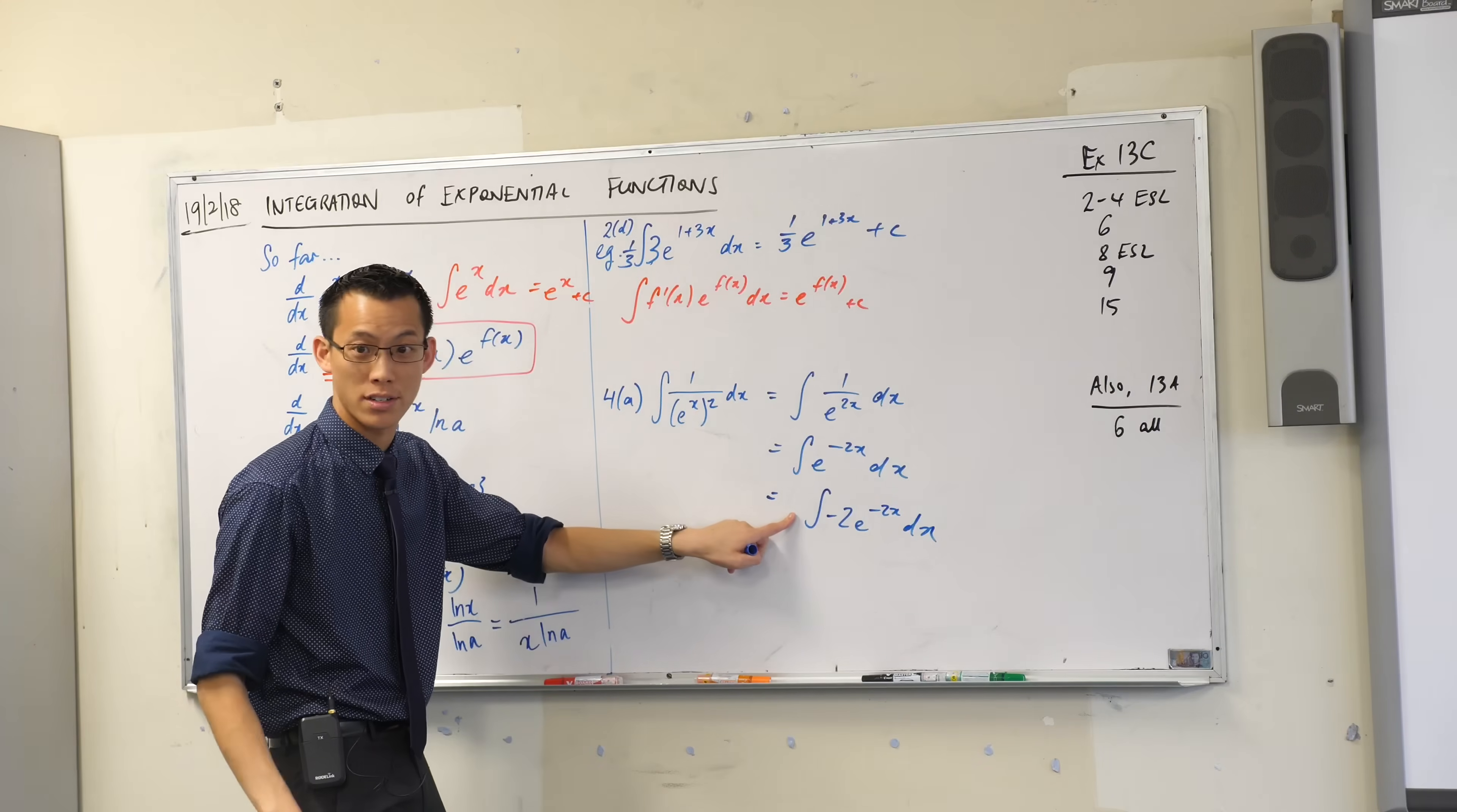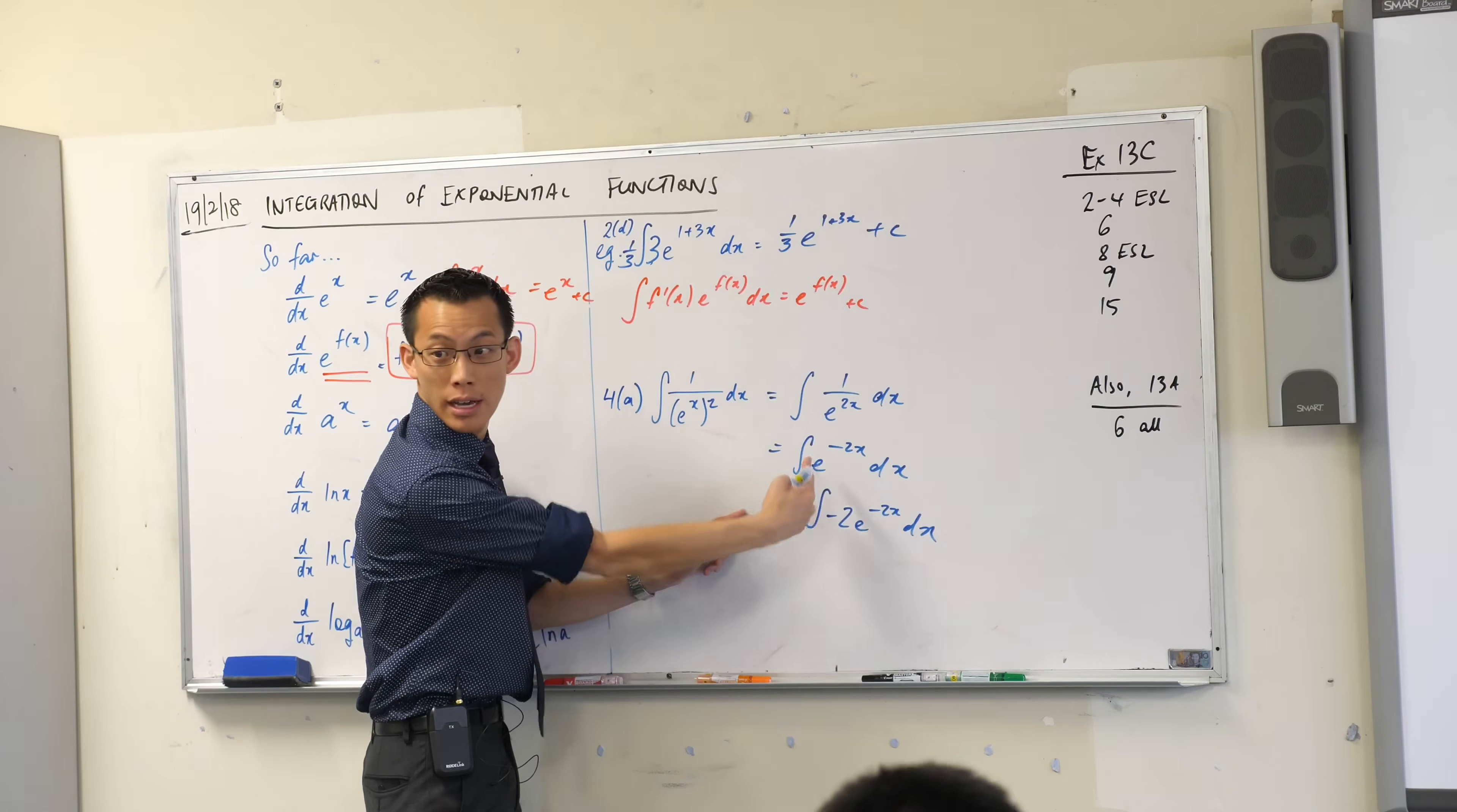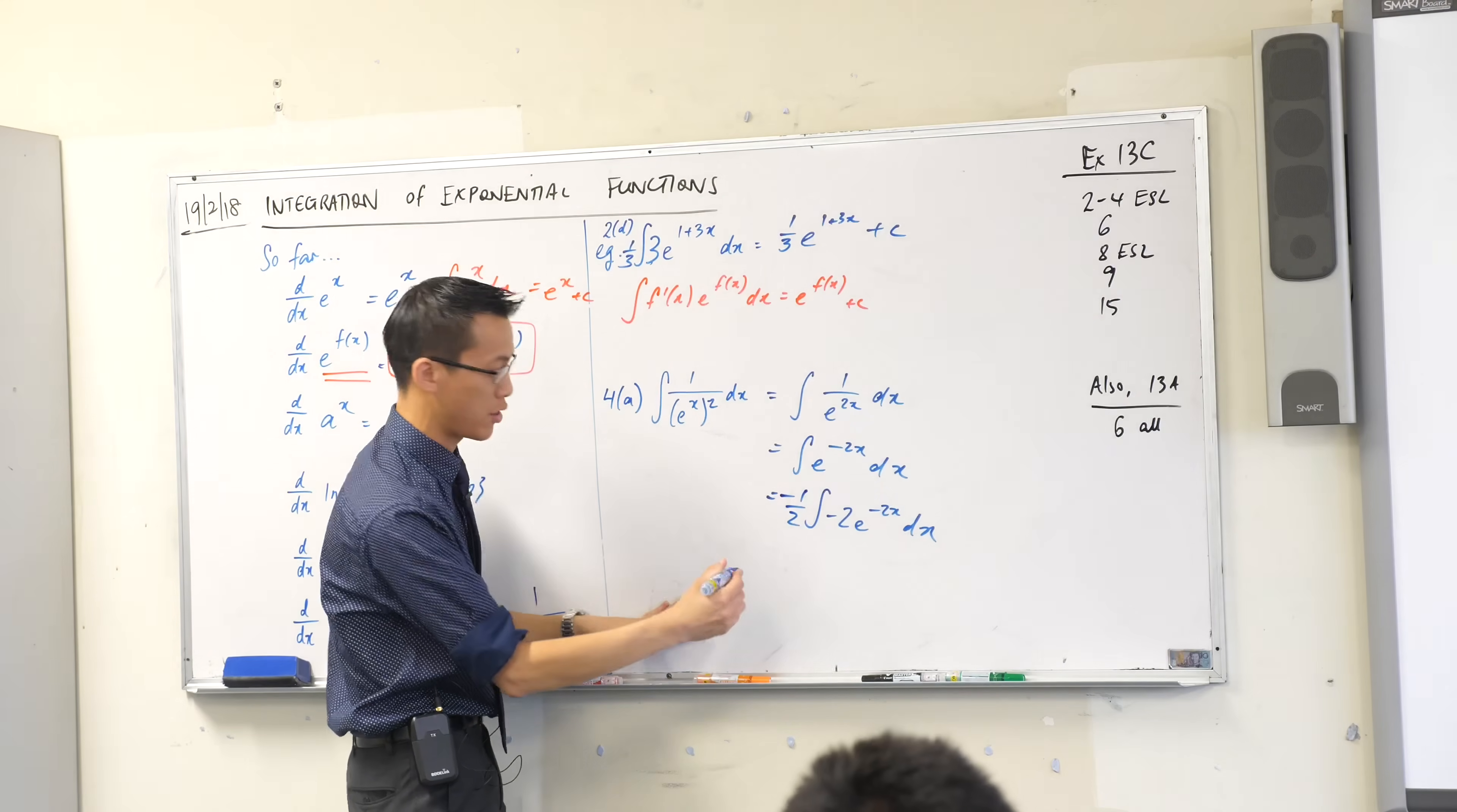So if I want a negative 2 in here, then what do I put out the front to compensate? Negative a half. Do you see? It'll cancel, cancel and send you back. Now I'm pretty much ready to go.